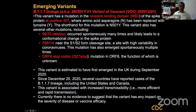The B.1.1.7 variant is associated with increased transmissibility and more rapid transmission. There's no evidence so far to suggest it has any impact on the severity of disease or vaccine efficacy. However, it's noted that the populations increasingly affected are younger populations — perhaps this increased transmission relates to more efficient spread to younger patients.